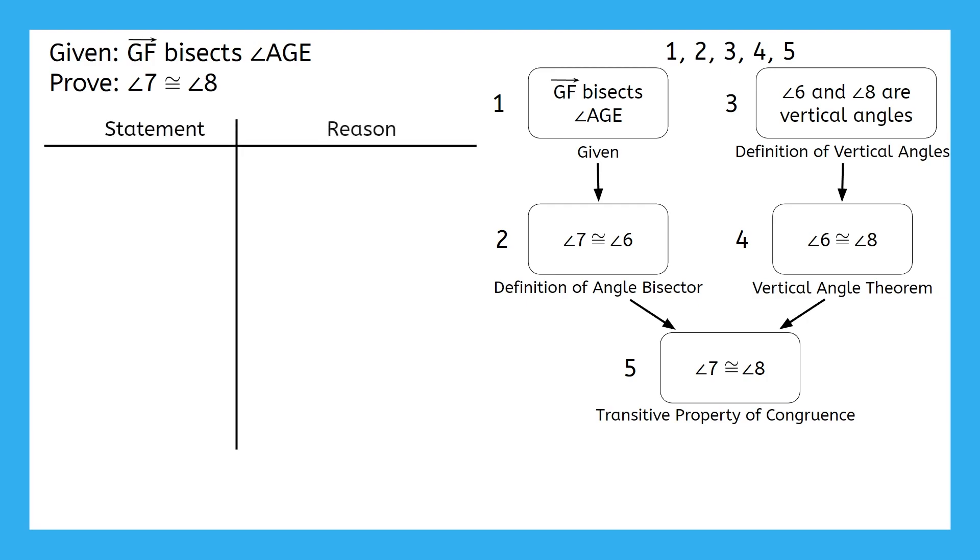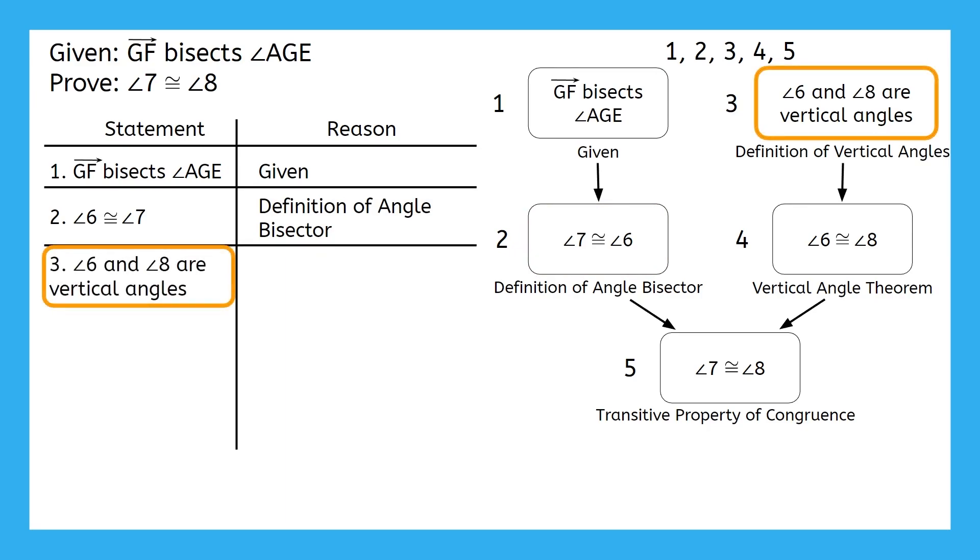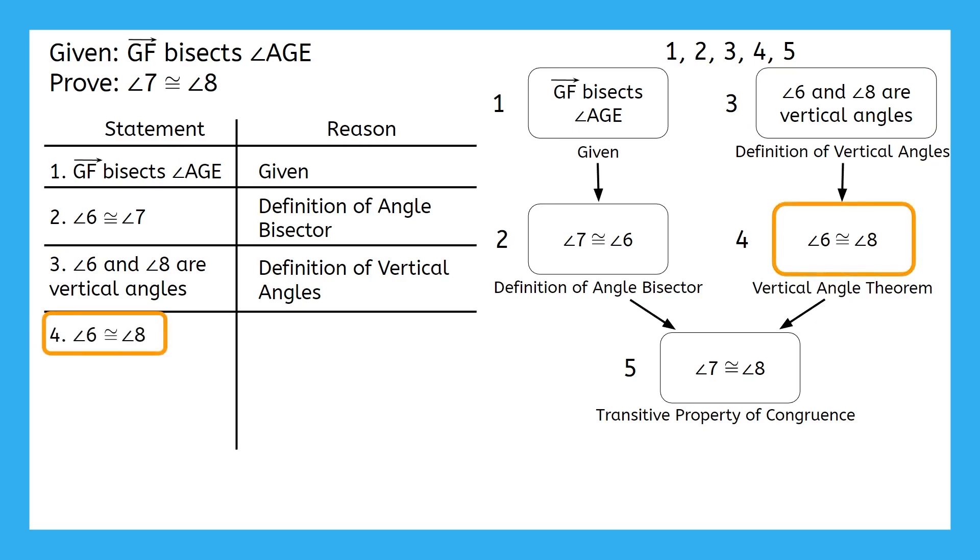Now, all that's left to do is put these statements into the two-column proof. Let's set it up and label the left column as statement and the right as reason. Pause the video here to try to write in the statements from 1 to 5 in your two-column format. One comes first, so our statement is Ray GF bisects angle AGE, and the reason is given. I always like to separate each line of my proof just to make it easier to read. Two comes next, so our statement is angle 6 is congruent to angle 7, and the reason is the definition of the angle bisector. Then, for three, the statement is angle 6 and angle 8 are vertical angles, and the reason is the definition of vertical angles. Next up is four, the statement is angle 6 is congruent to angle 8, and the reason is the vertical angle theorem. Lastly, for five, the statement is angle 7 is congruent to angle 8, and the reason is the transitive property of congruence. We made it! We were able to show exactly what we were asked to prove.